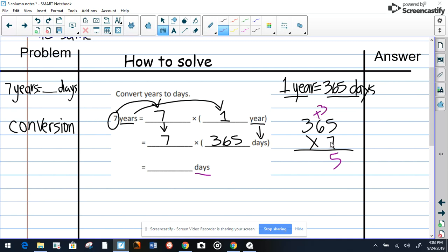Seven times five equals 35—you carry three over to the tens. Seven times six equals 42, plus three equals 45—you carry four over to the hundreds. And seven times three equals 21, plus four equals 25.